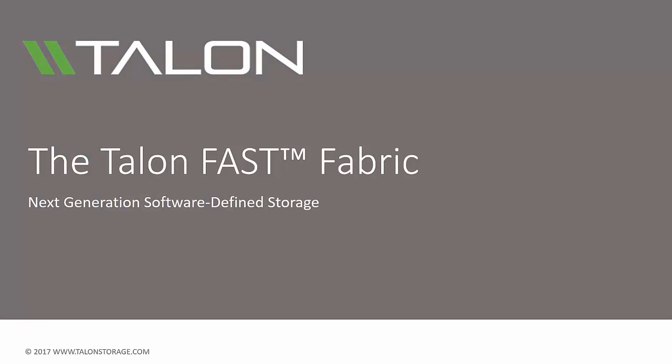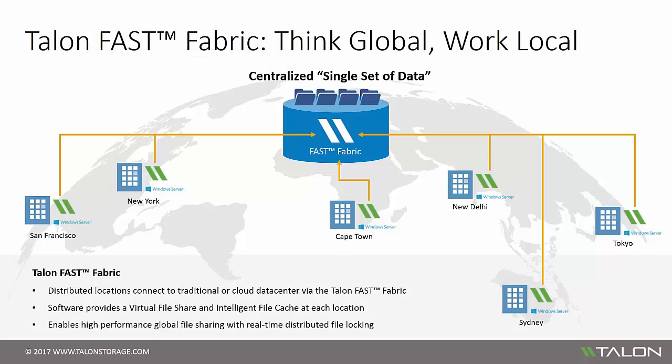The Talon Fast Fabric interconnects all of your locations, from distributed branch offices to the centralized data center, on-premise or in the cloud. The Fast software at distributed locations provides seamless access to a virtual file share and high-performance file access via the intelligent file cache, which is unique to each location. Users at any site have immediate access to centralized datasets, enabling real-time global file sharing and collaboration with distributed file locking.